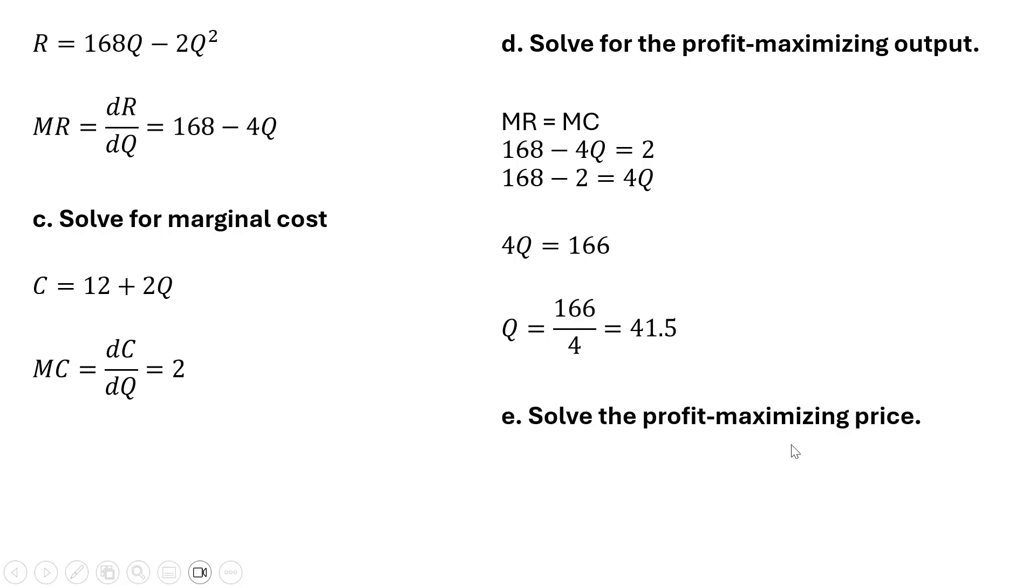Now let's get the profit maximizing price. We're going to take this 41.5 for q and plug it into the inverse market demand. We replace q with our profit maximizing output and we get a profit maximizing price of $85 per unit.